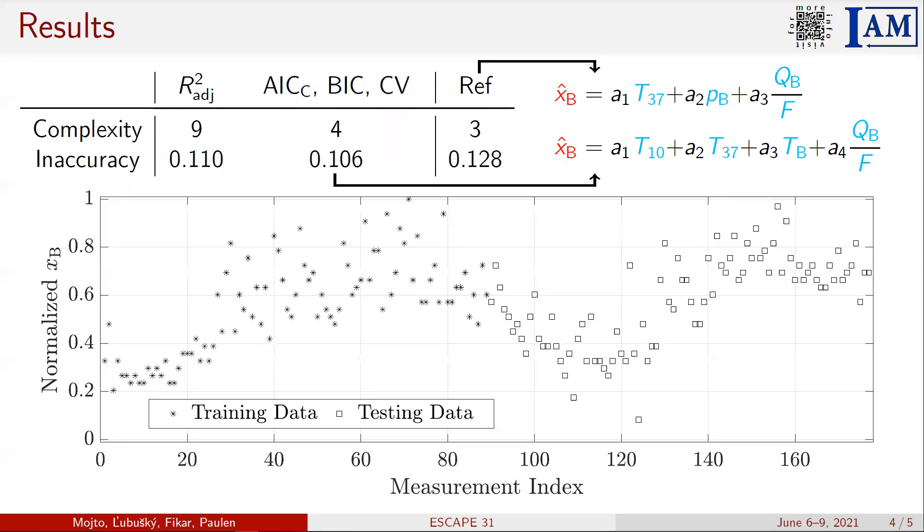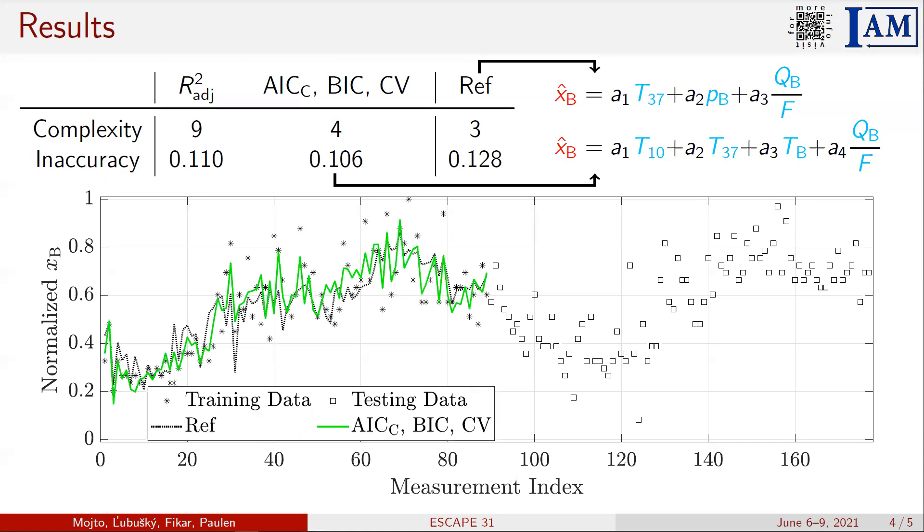The following graph illustrates the distribution of the data to the training and testing set in our experiment. At first, we design the inferential sensor according to the training set, and then we evaluate the performance of these sensors on the testing set.